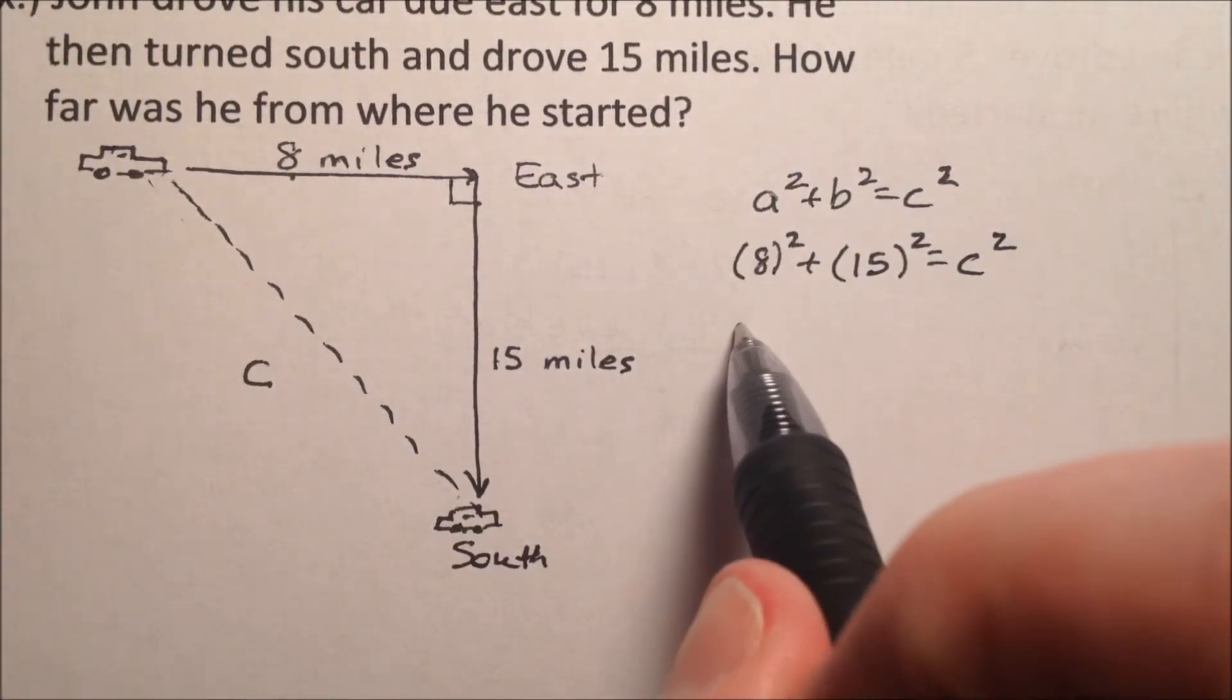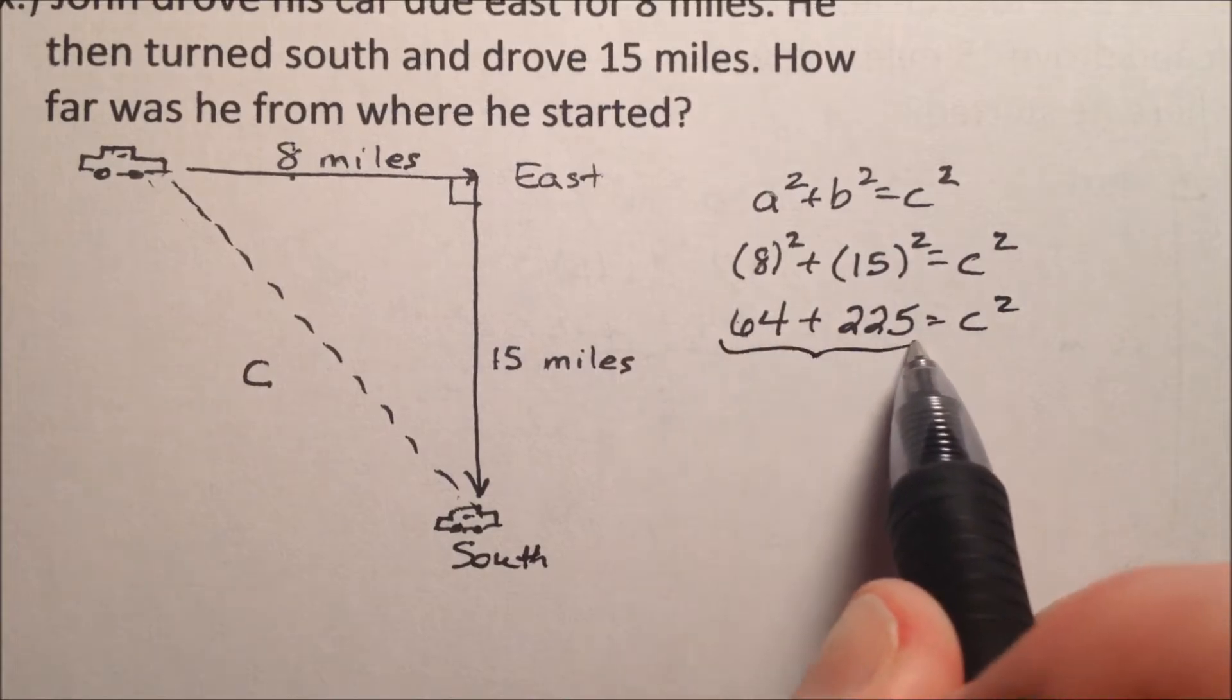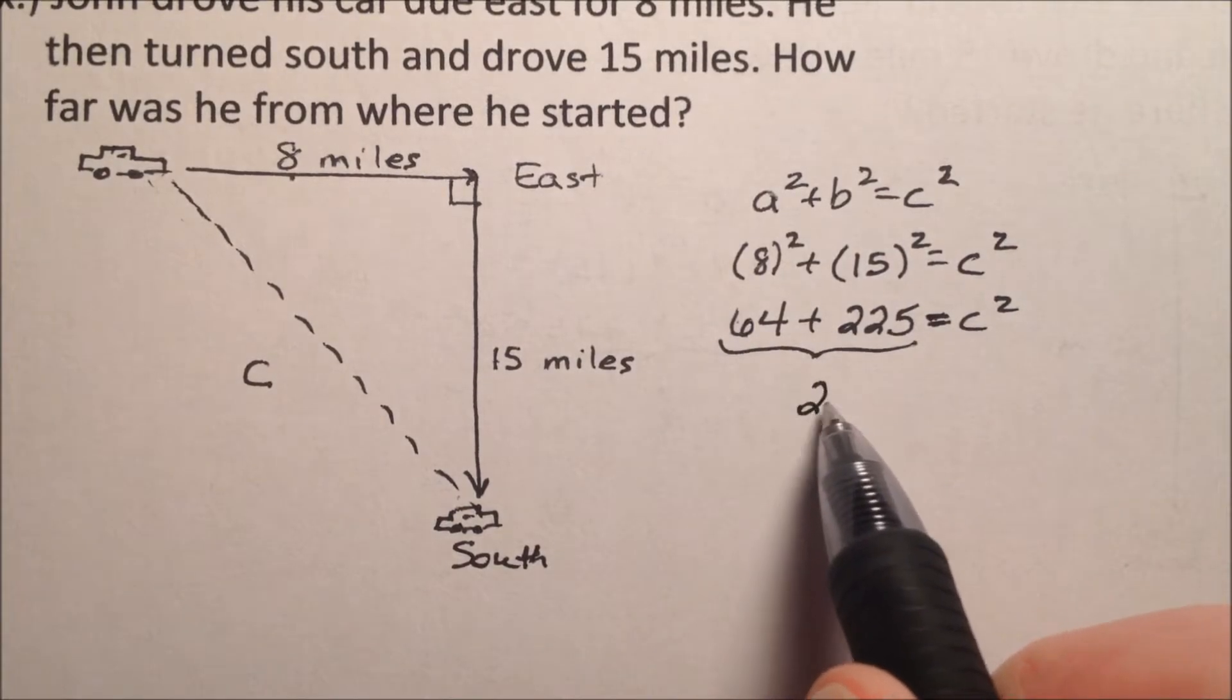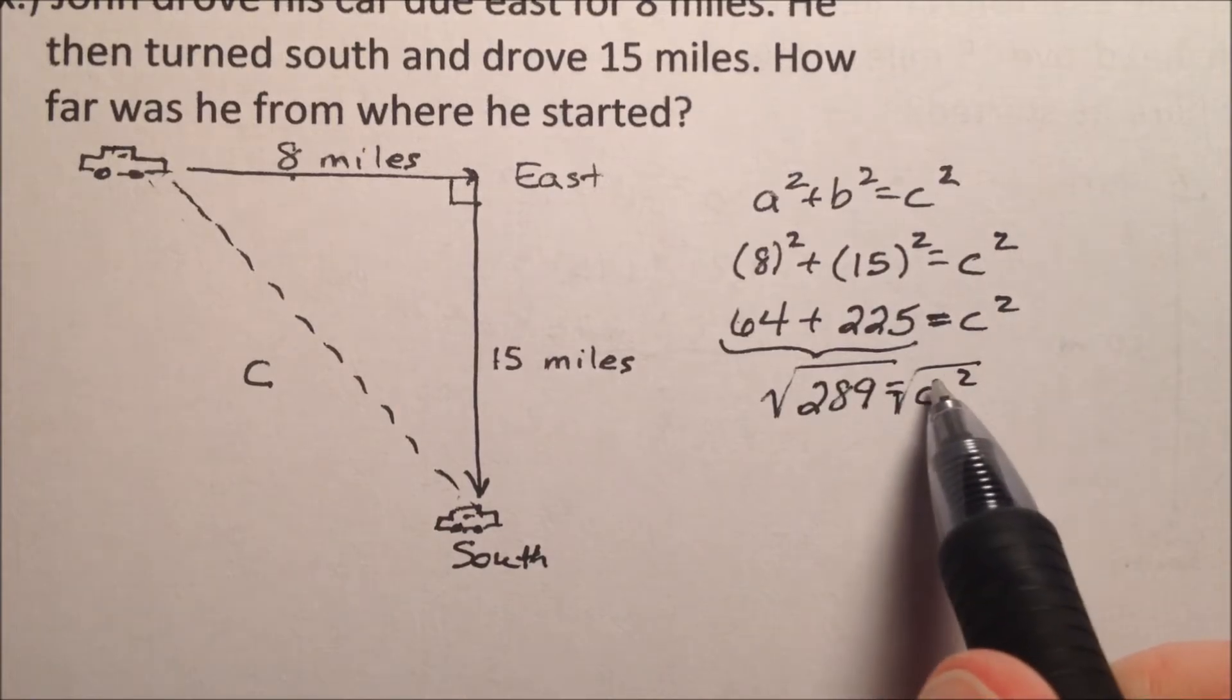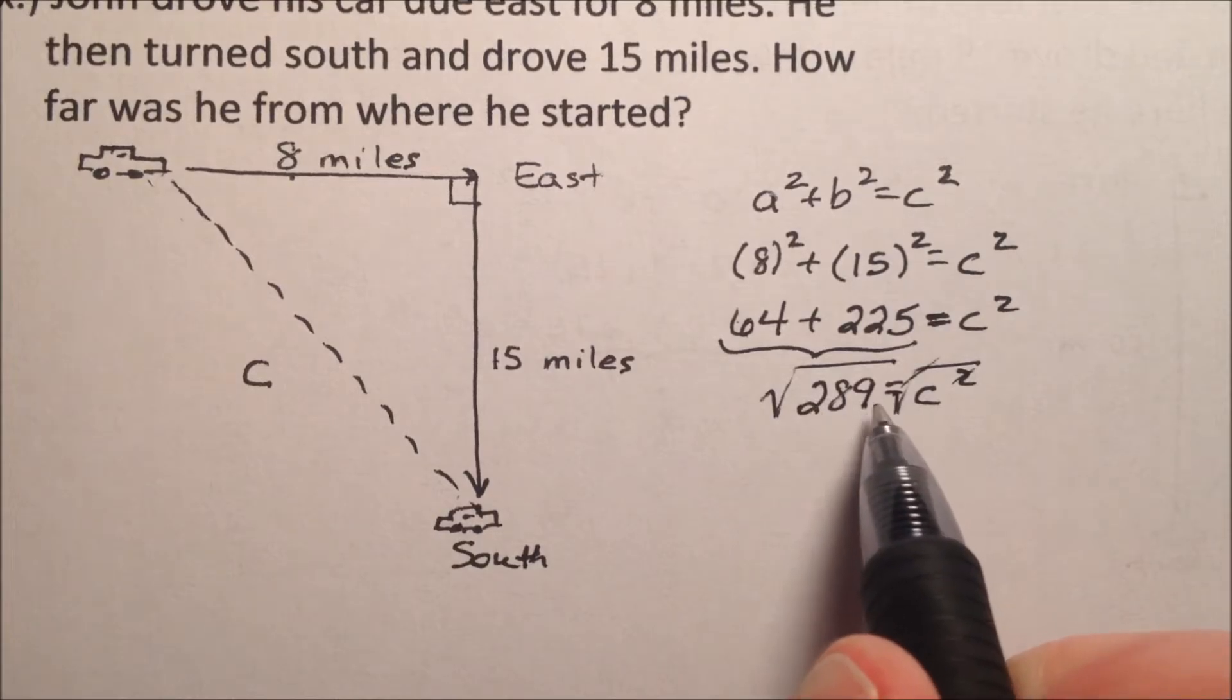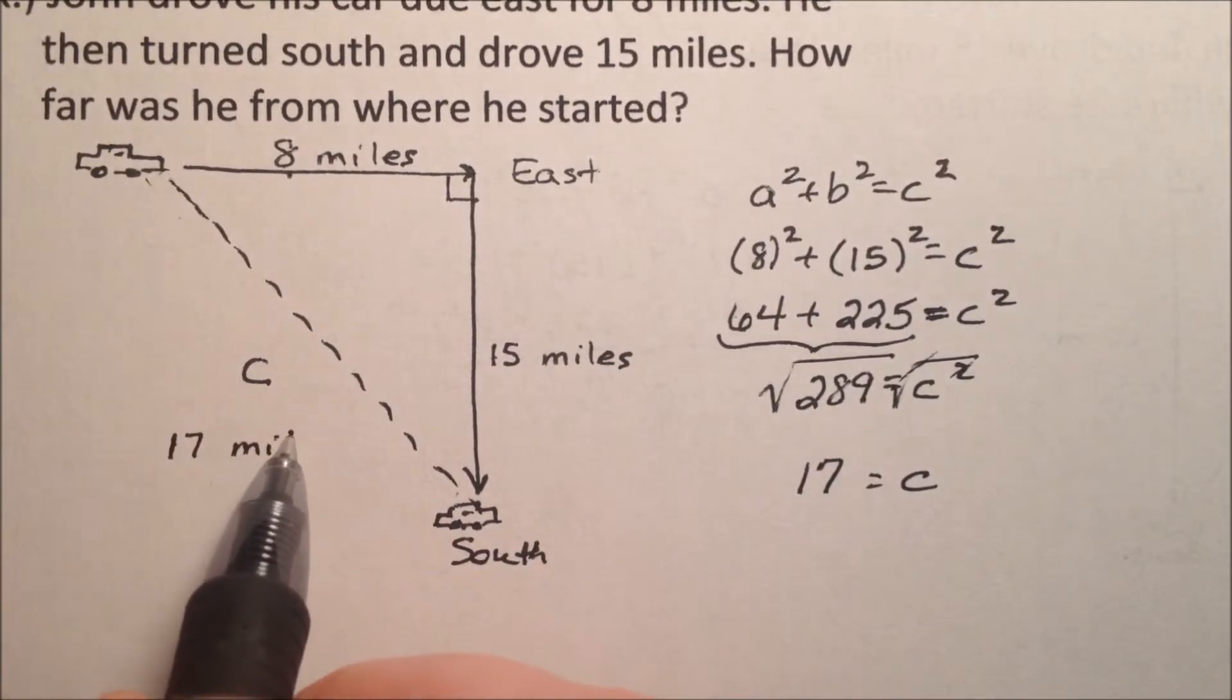Okay, so eight squared is going to be 64. 15 squared will be 225 = c². So when we add these up, it looks like we're going to get 289 = c². So if we take the square root of both sides, so we can cancel out this radical in the square, we'll get c equals, and then the square root of 289 will be 17. So my value of C right here is actually 17 miles.